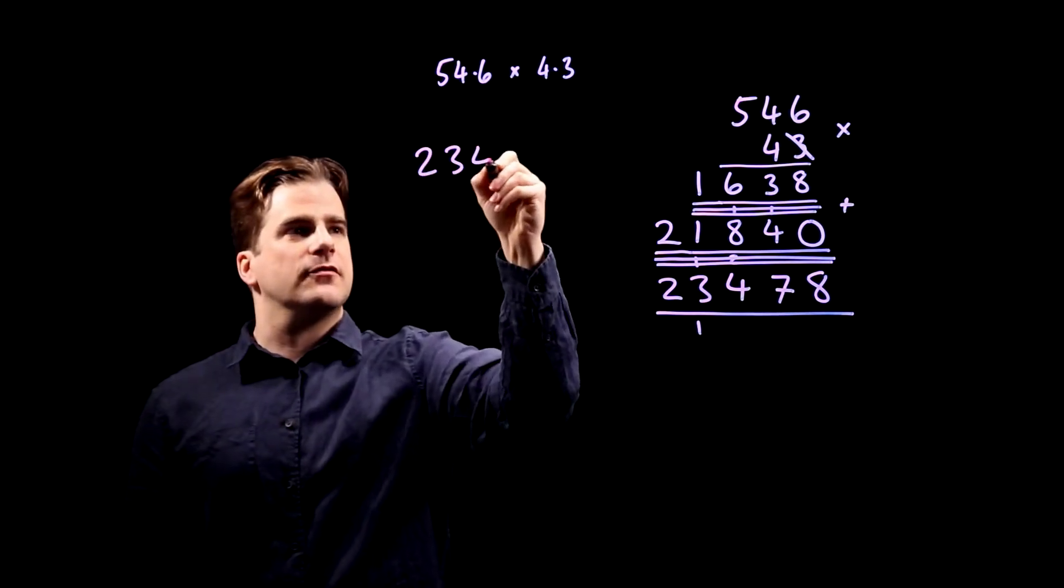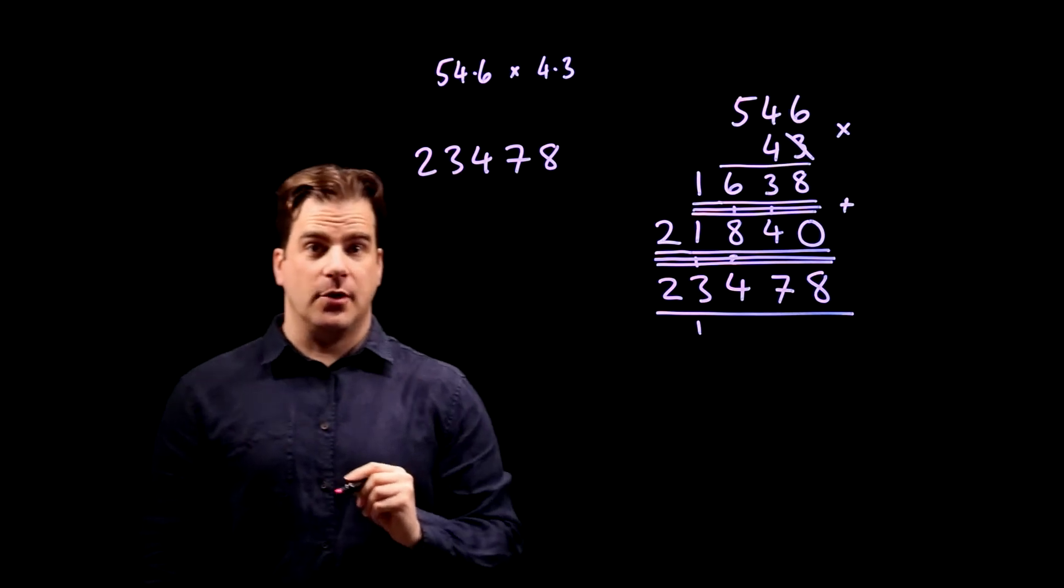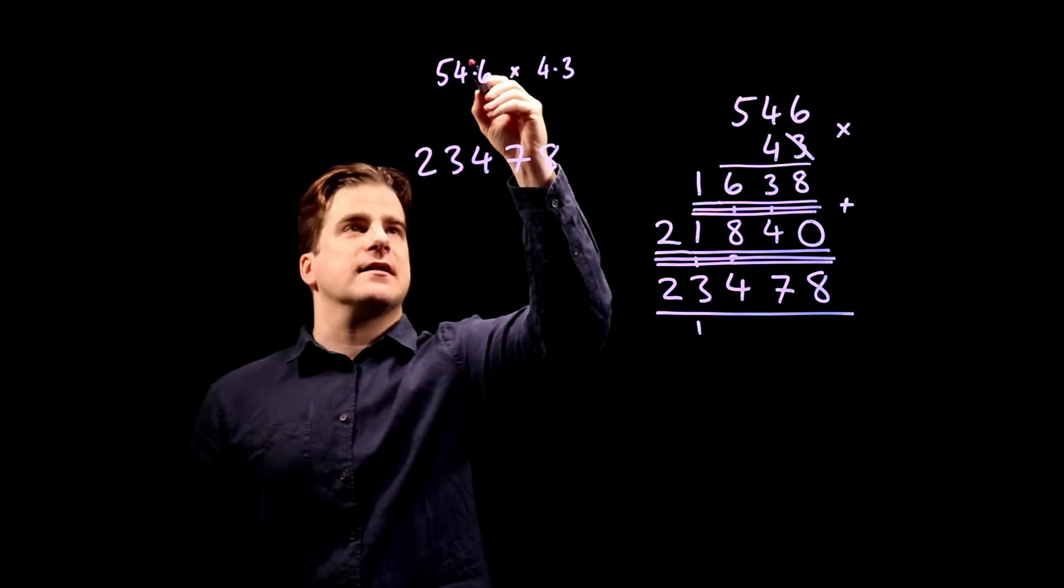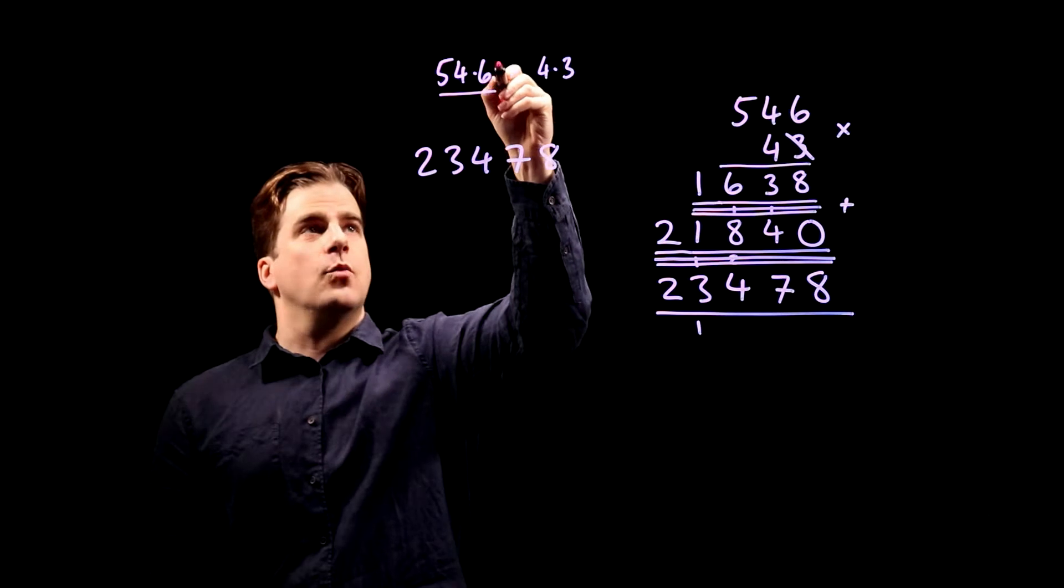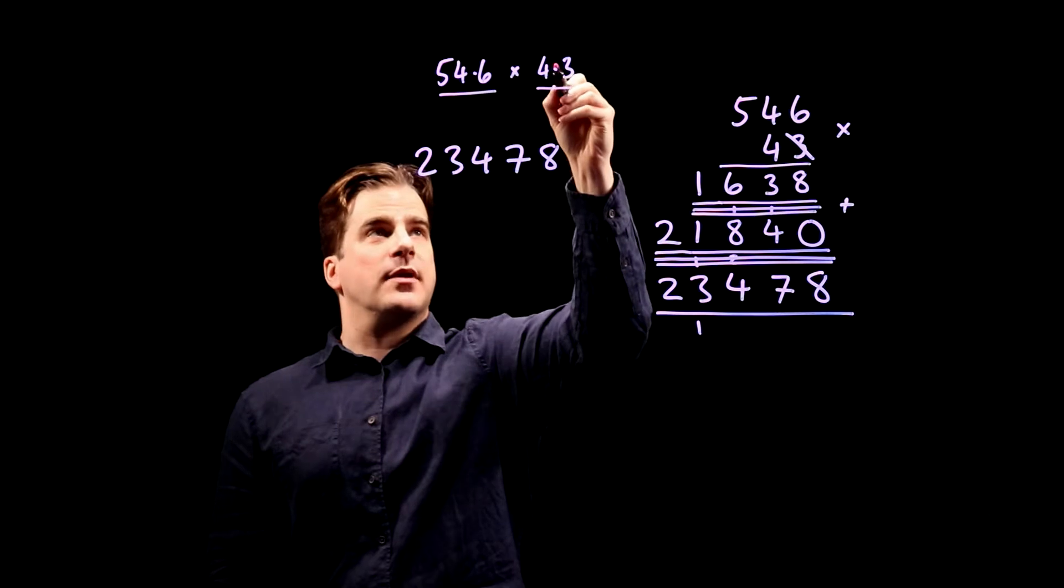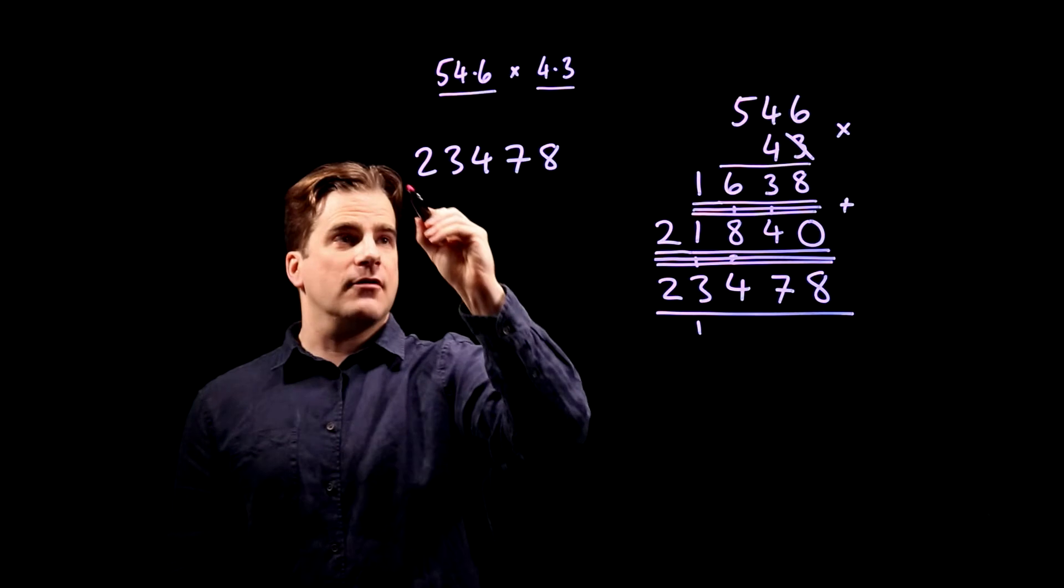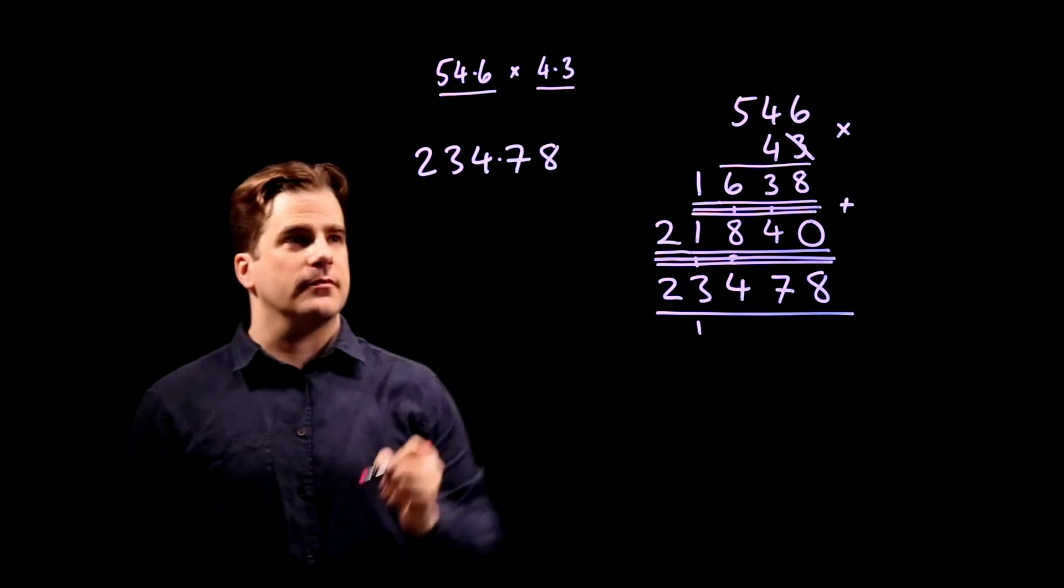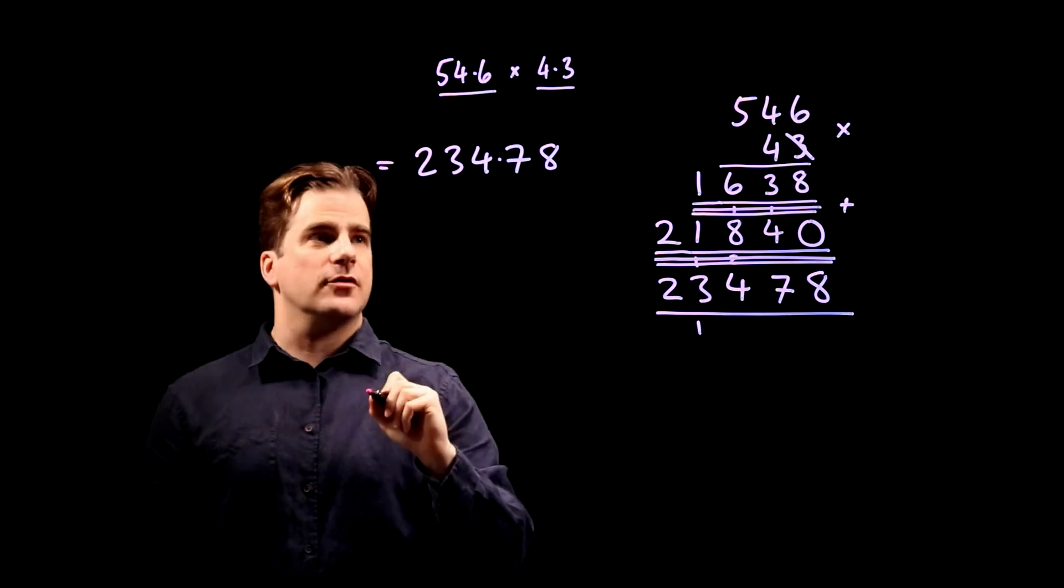Now we're ready to look at the decimal points. If we look at the original numbers, you can see that the decimal point on this one is one place in, the same on this one, it's one place in for a total of two places. Which means in our answer we bring the decimal point in two places: one, two, boom, to there. And that's the answer: 234.78.